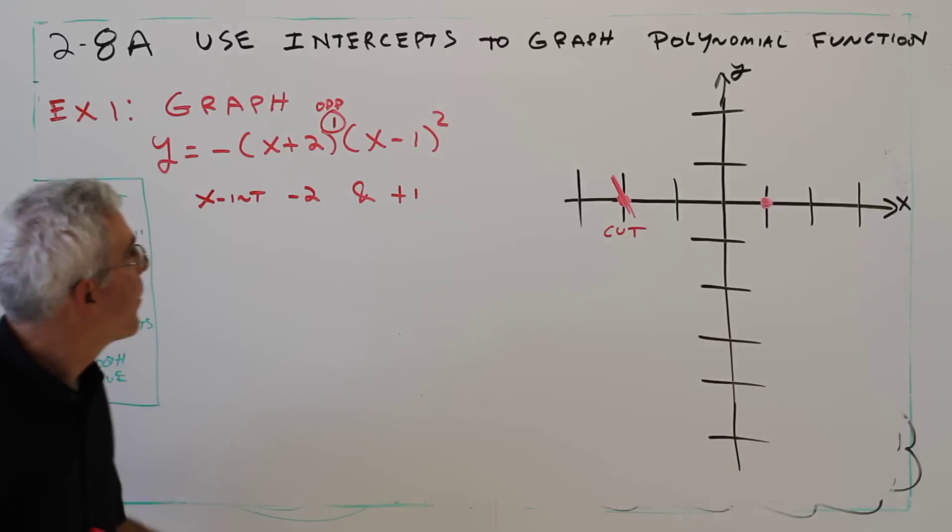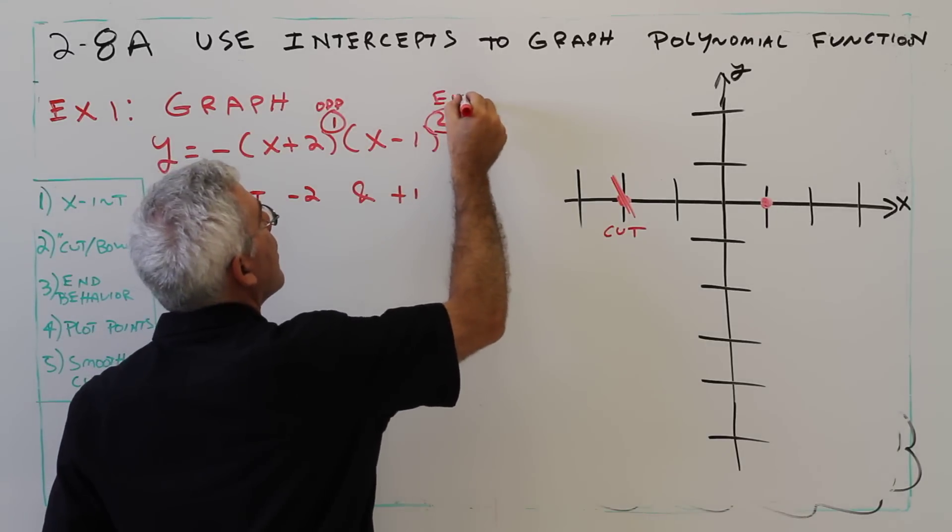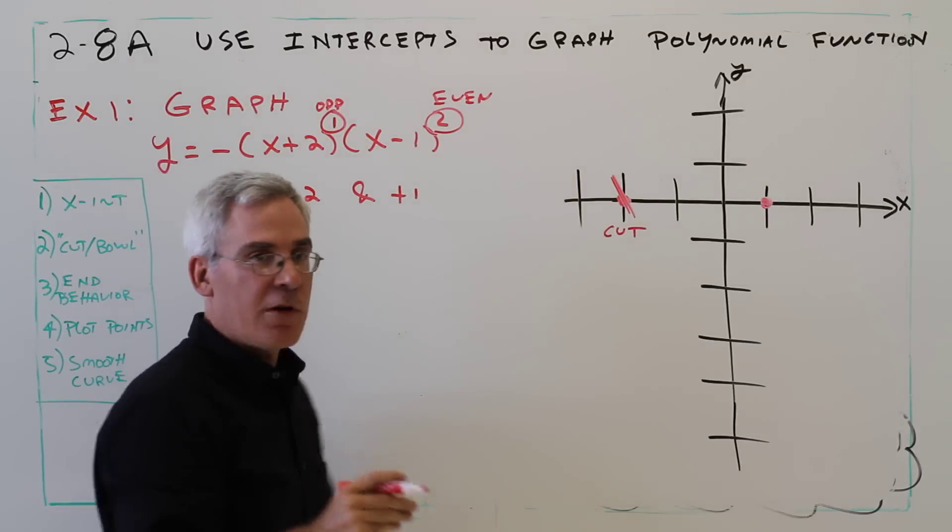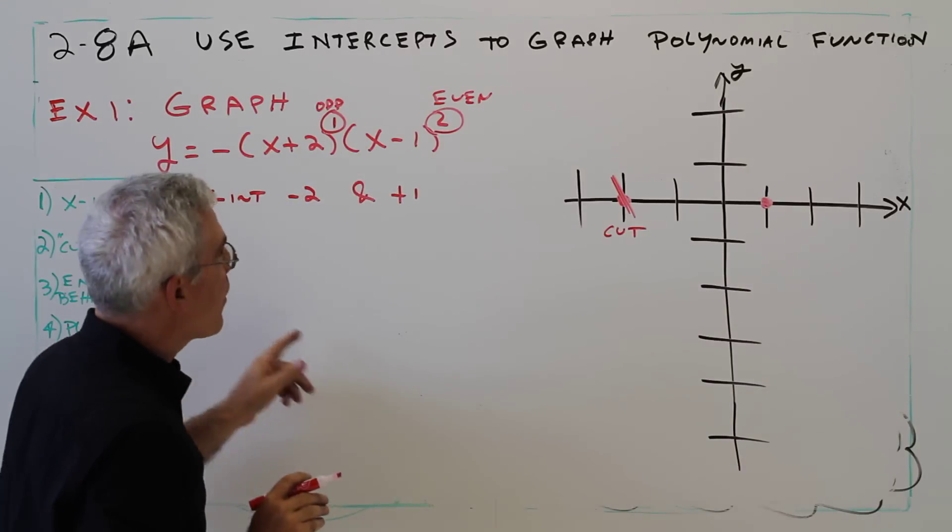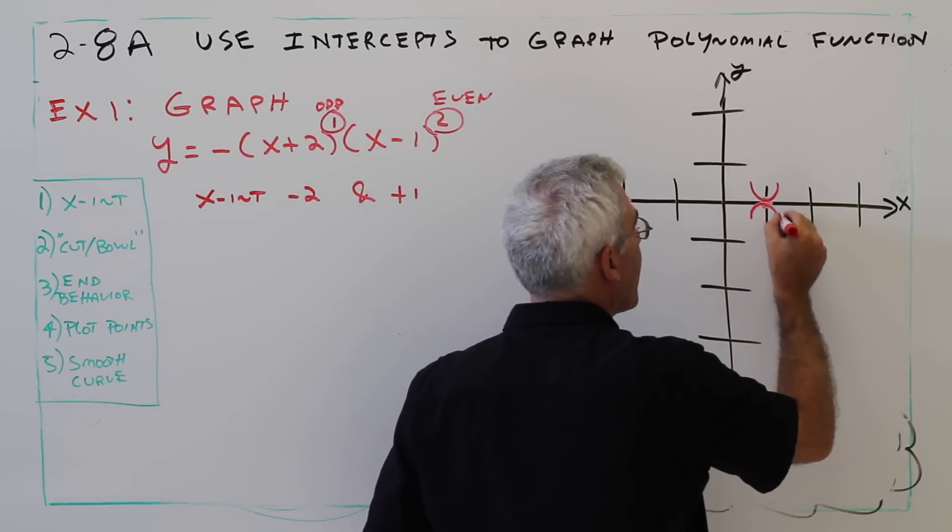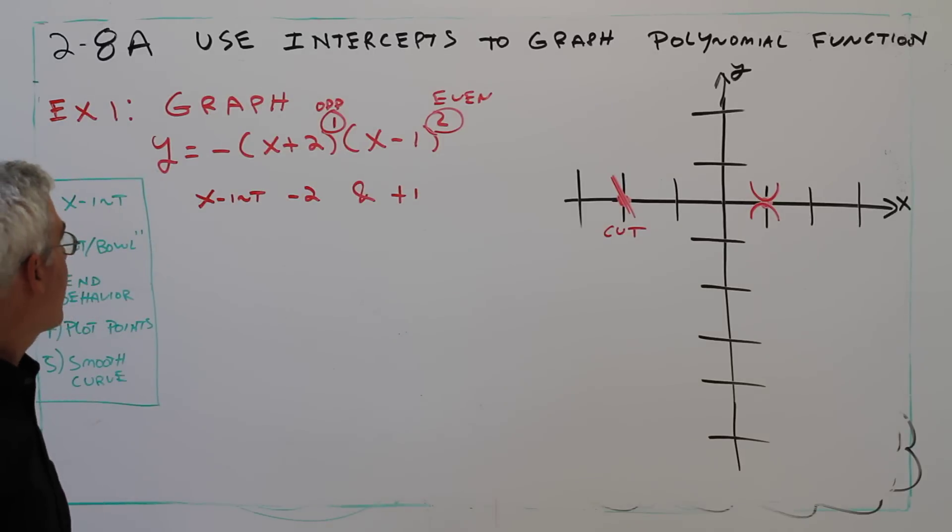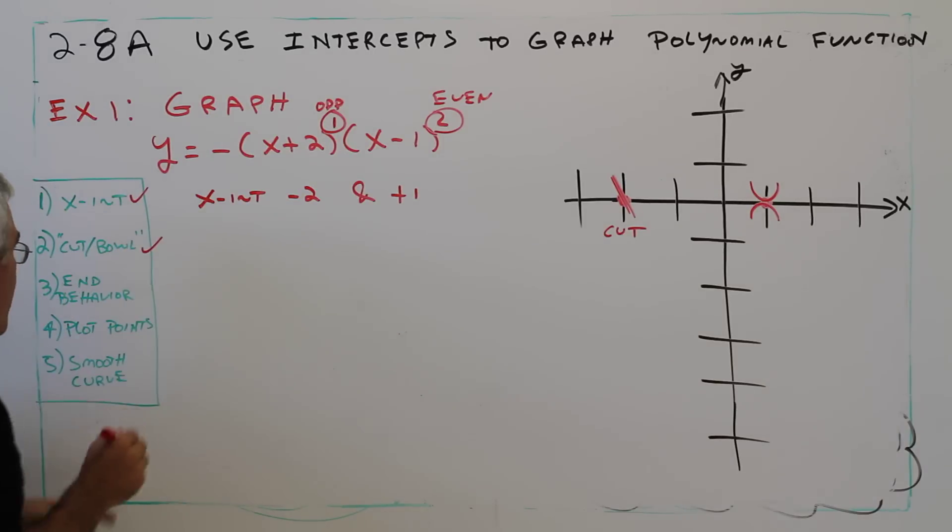This exponent over here is even, so it's going to be a bowl, kind of like a parabola. Now it could either bowl up or it could bowl down. The end behavior will help me determine which one is correct. So I found the intercepts, cut or bowl. Let's do the end behavior.